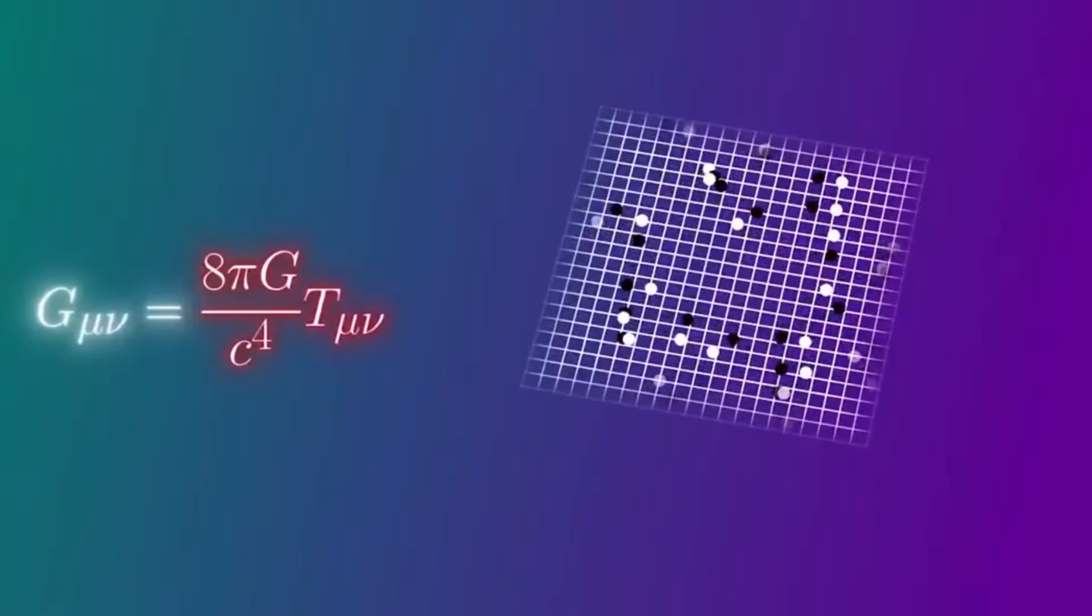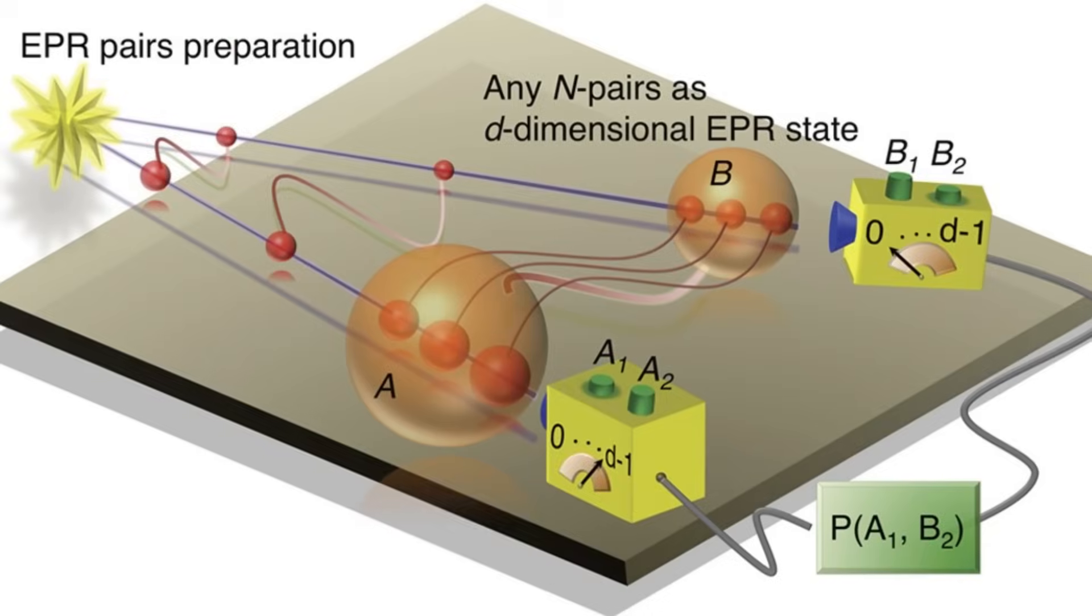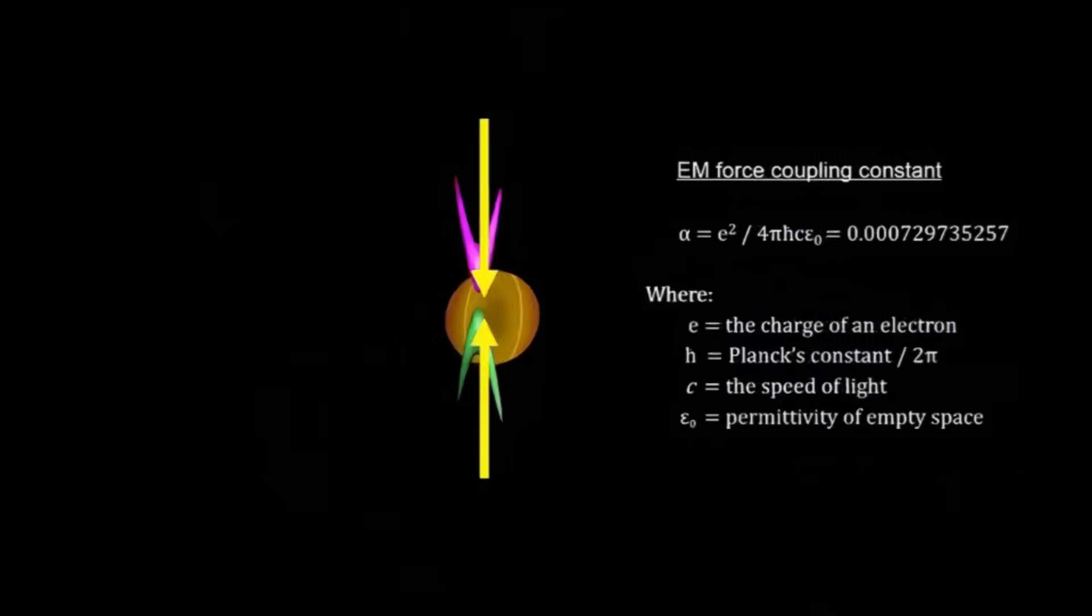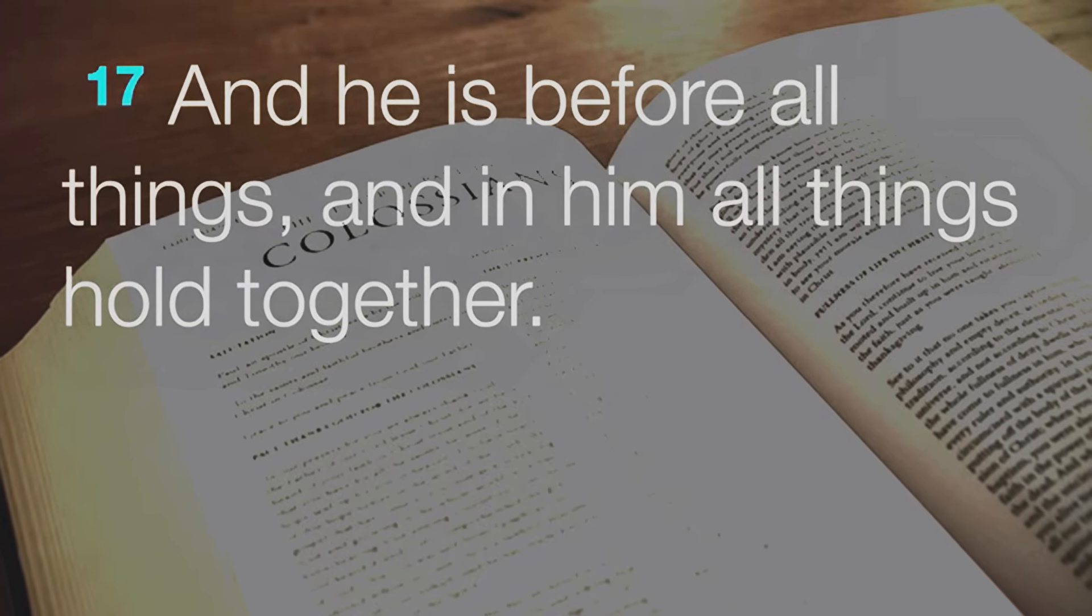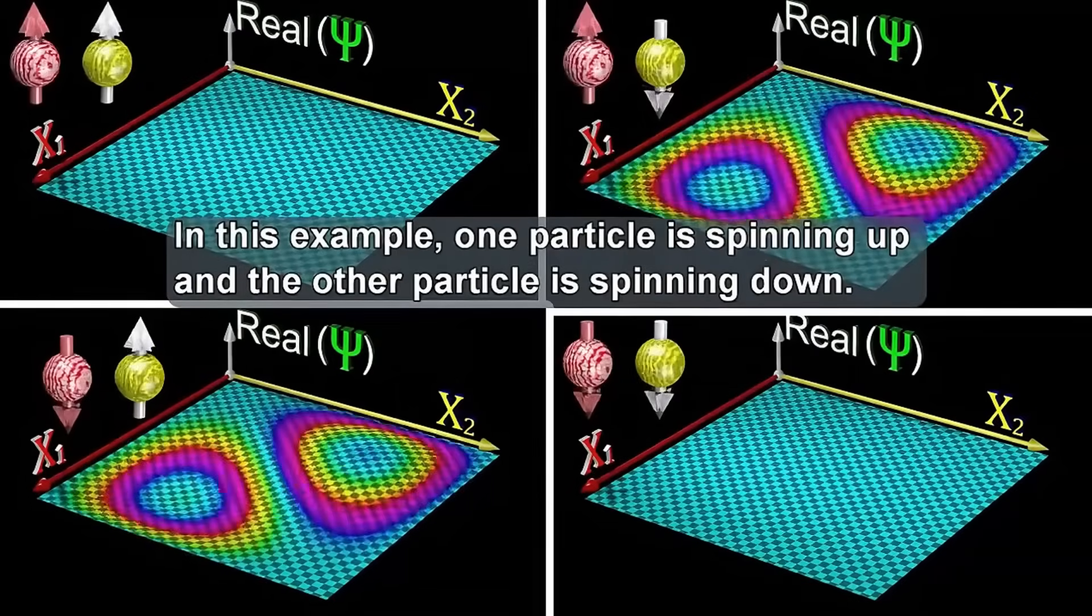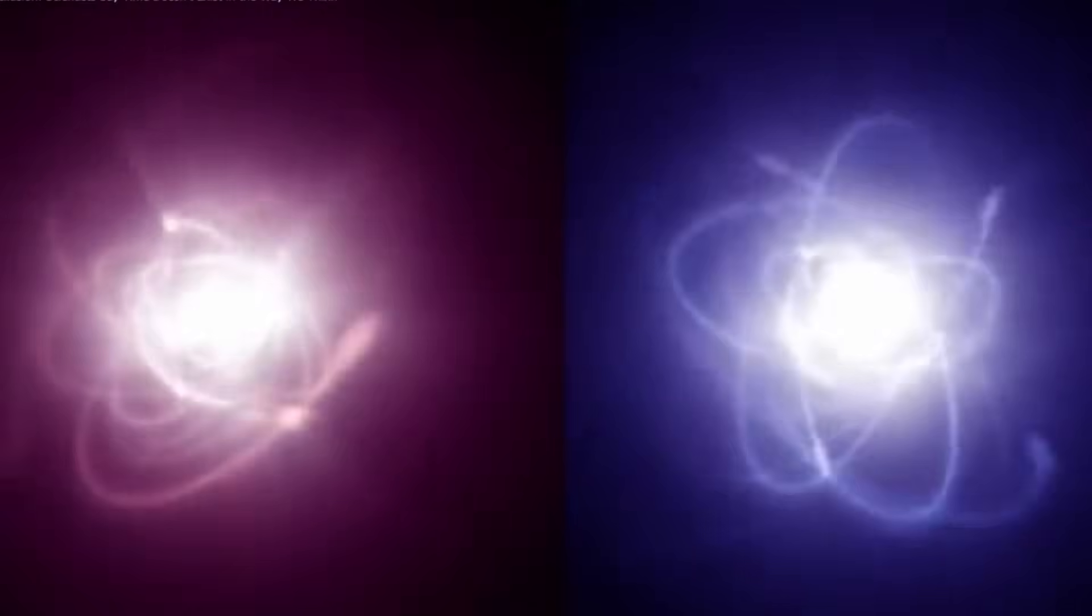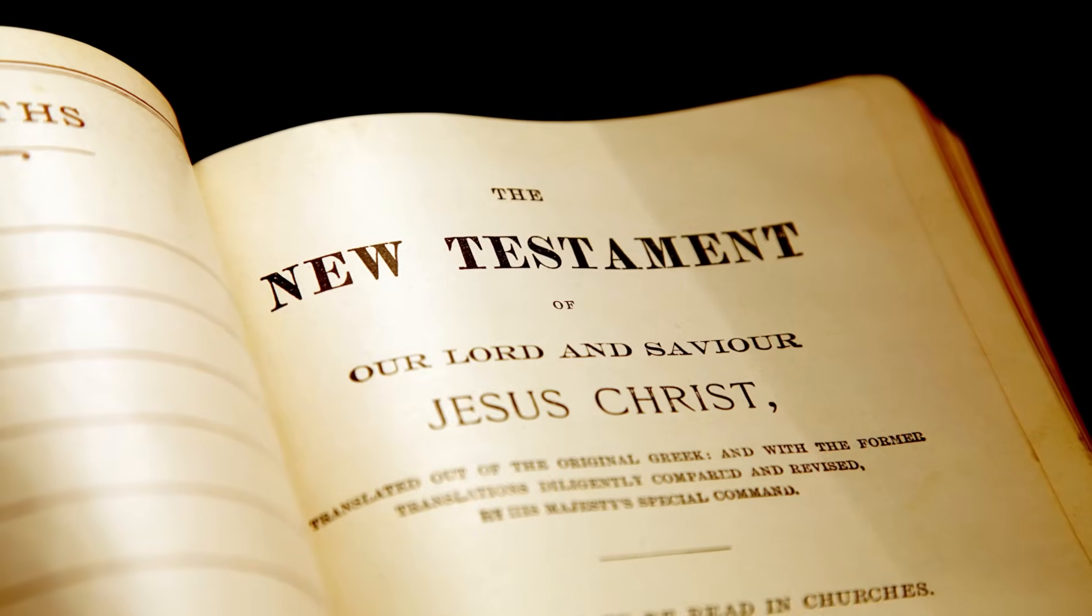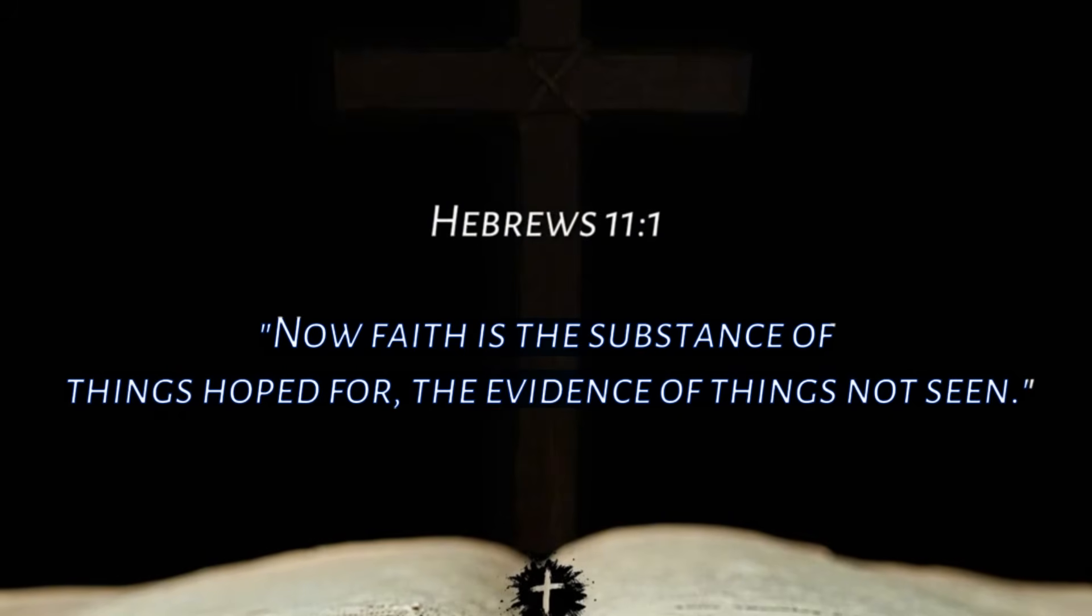The measurement problem in quantum mechanics—how and why a wave function collapses into a single outcome—mirrors age-old theological debates about free will versus divine determinism. If reality chooses its state only when observed, is that observer truly free, or are they part of a preordained script? Scripture wrestles with this tension. Humans are called to choose, yet God's sovereignty remains absolute. In quantum terms, does the universe await our measurement to decide its fate? Or is every outcome already encoded in the cosmic wave function? Framing free will as a quantum collapse invites us to reconsider prayer, intention, and moral responsibility under the lens of participatory reality.